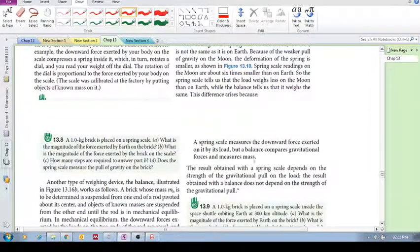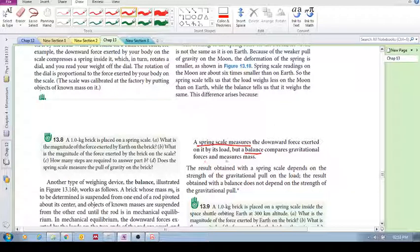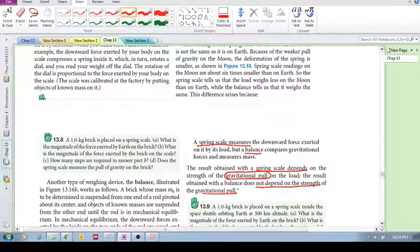So let's come to this conclusion: a spring scale measures the downward force exerted on it by its load, and that downward force is dependent on gravitational force. But a balance compares gravitational forces and measures mass. The result obtained with a spring scale depends on the strength of the gravitational pull at Earth or at the Moon on the load. However, the result obtained with a balance is independent—does not depend on the strength of the gravitational pull.